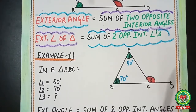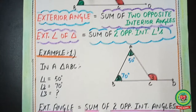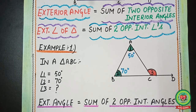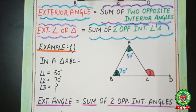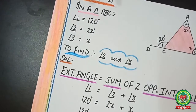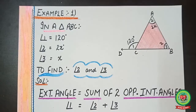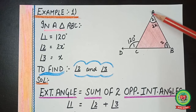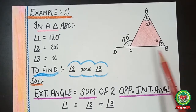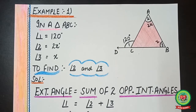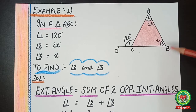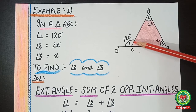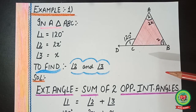Earlier we covered how to find a missing angle by applying the exterior angle property, whenever we were given any two interior angles, or one interior and one exterior angle. Now today we will start questions where the angles are given with a variable. Here you can see a figure in which triangle ABC is given and the line BC has been extended to point D. Angle A is given as 2x, angle B as x, and angle C as 120 degrees.